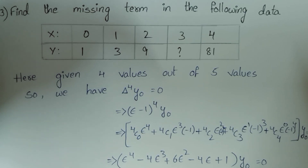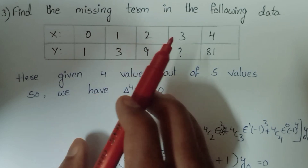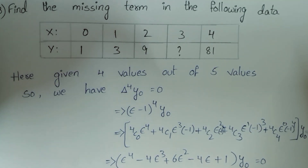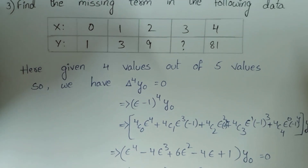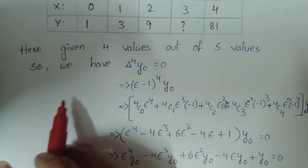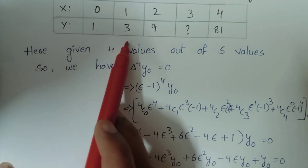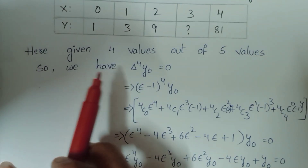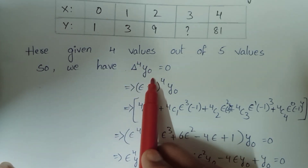Now the important 8th problem: find the missing term in the following data. The table has x values 0, 1, 2, 3, 4 and y values 1, 3, 9, ?, 81. We need to find the missing y value.